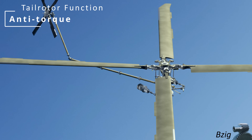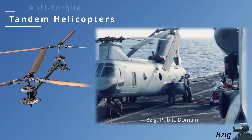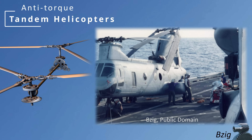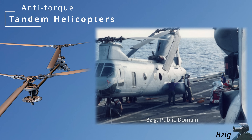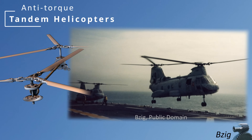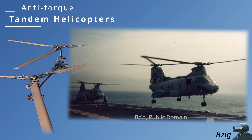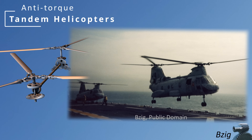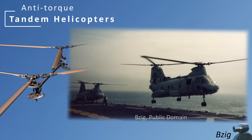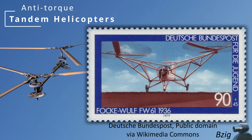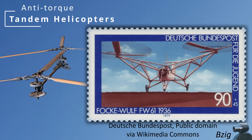In the history of helicopters, there have been more than one way to oppose the torque of the main rotor. Some designs solved the anti-torque problem by incorporating two rotors turning in opposite directions. These are called tandem helicopters. While most of us are familiar with fore-and-aft tandems such as the Boeing 107, one of the first successful helicopters, the Focke-Wulf 61, was a side-by-side tandem.